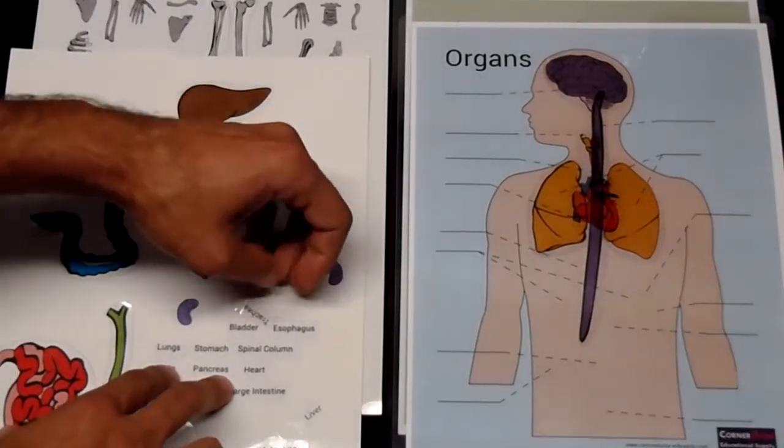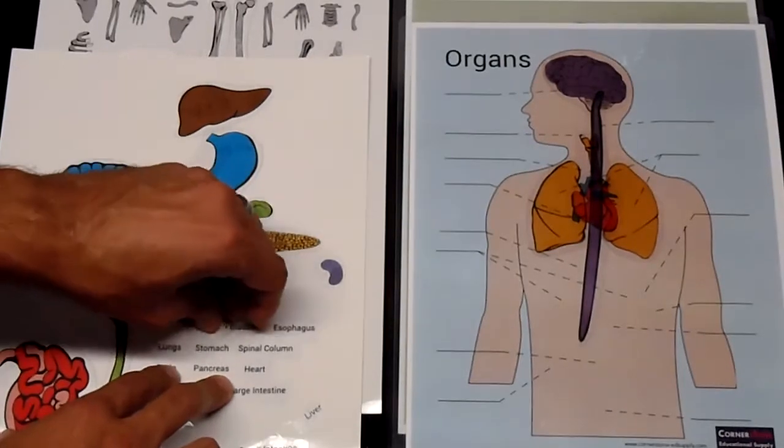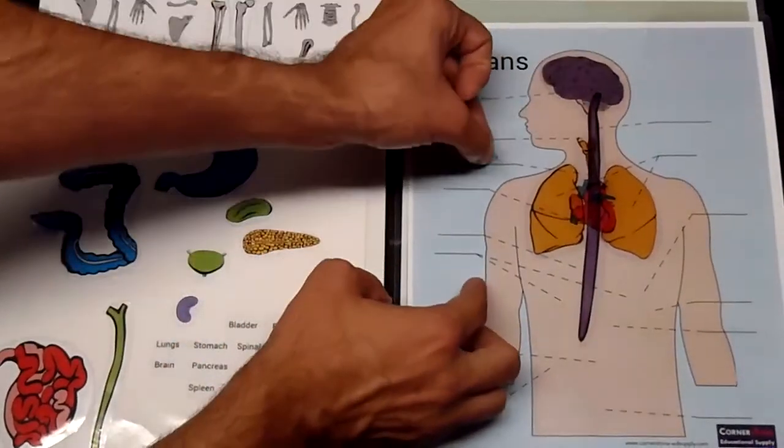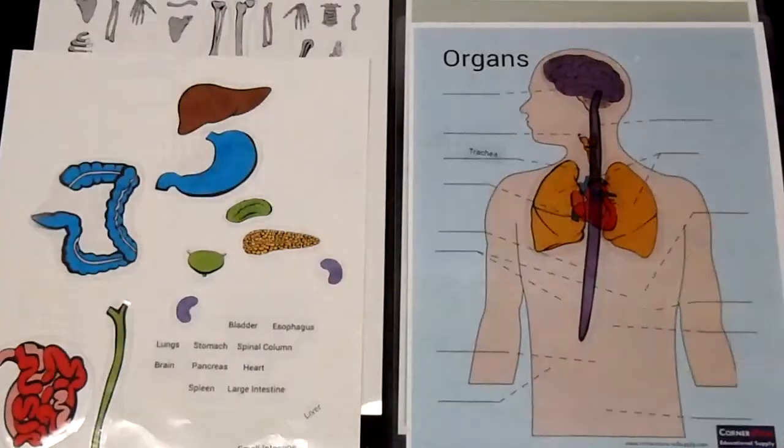Again, they also have the stickers that have the names on these so they can learn, OK, I just put the trachea down. This is where we put the labels for the trachea.